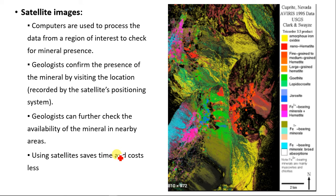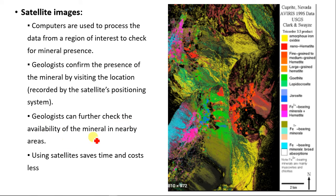Satellite images are also used for exploring minerals. Computers process data from a region of rocks to check for mineral presence. Geologists confirm the presence of minerals by visiting the location recorded by the satellite positioning system, and can further check availability in nearby areas. Using satellites saves time and costs less.